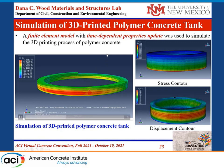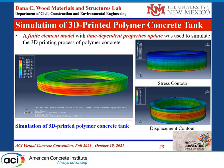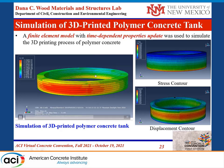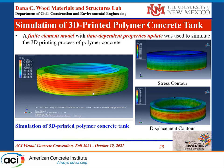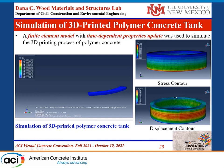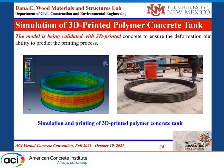The finite element model is time-dependent, so we change the mechanical properties of the material as printing progresses — changing both the green strength description and the material capabilities — and we start seeing if there is a chance for failure due to strength or stability requirements. We are also now working on monitoring the actual 3D printing process and comparing it versus the model.